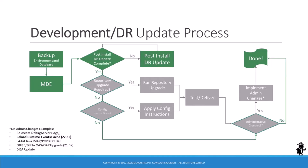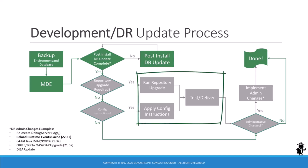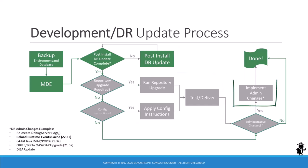Here we can see the update process for development environments, where the fast track to a successful update is as follows: take a backup, run the MDE, run the post-install database update. If you have no repository upgrades, configuration instructions, or administrative changes to implement, you're done. If you need to execute the non-mandatory repository upgrade or apply configuration instructions, you have to do that in the development environment and test and deliver these changes. If you have any administrative changes on your to-do list, you have to implement them as well before declaring success.